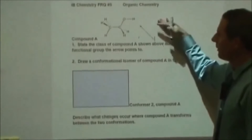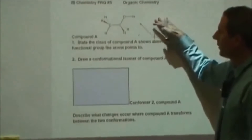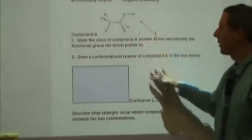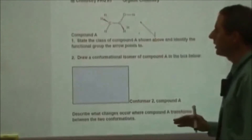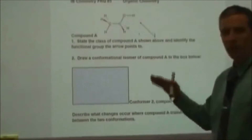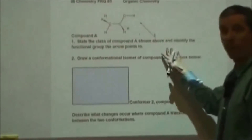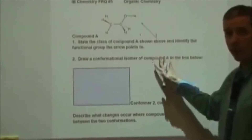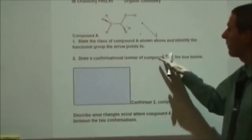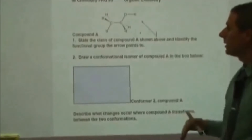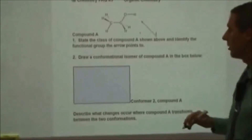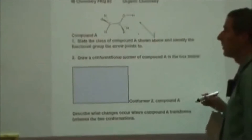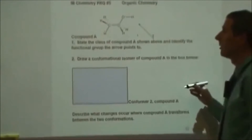Here we are going to go through the fifth IB FRQ, this is a paper 2 style question on organic chemistry. If you would like to try the problem first, go ahead and pause this video now. There's a link to the Google Doc with this problem in the description below, as well as some other problems if you want more help after.